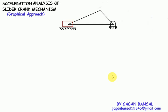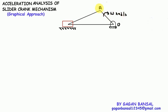Hello everyone. In this session we will be discussing acceleration analysis of slider crank mechanism. In the last lecture we started velocity analysis of slider crank mechanism, so let's start with acceleration analysis. Consider this slider crank in which OA is a crank rotating with constant angular velocity omega radians per second in the clockwise direction. AB is a connecting rod and B is a slider reciprocating along line OB.